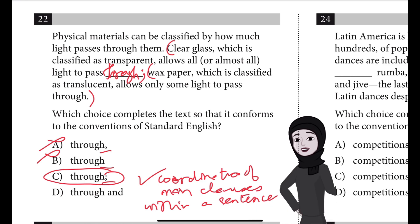Choice D is incorrect because when coordinating two longer main clauses such as these, it's conventional to use a comma before the coordinating conjunction.